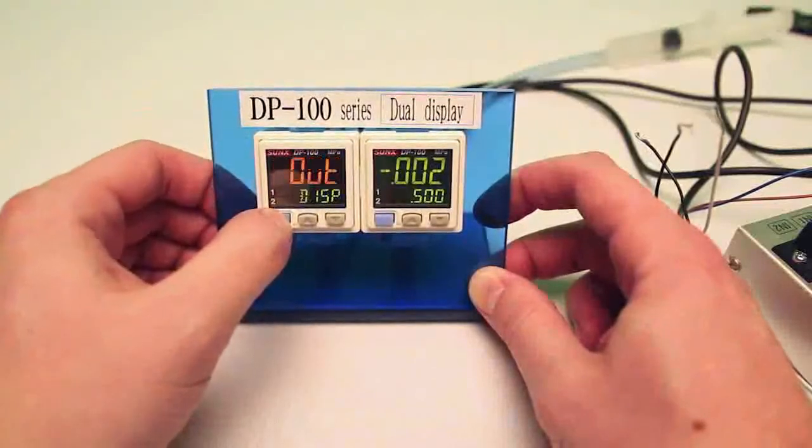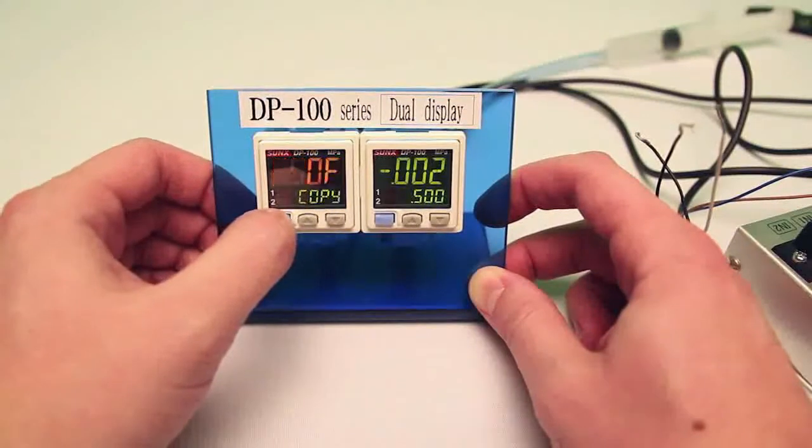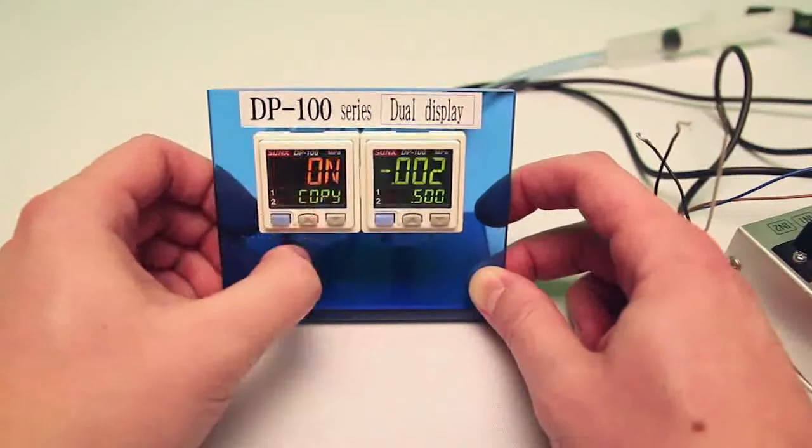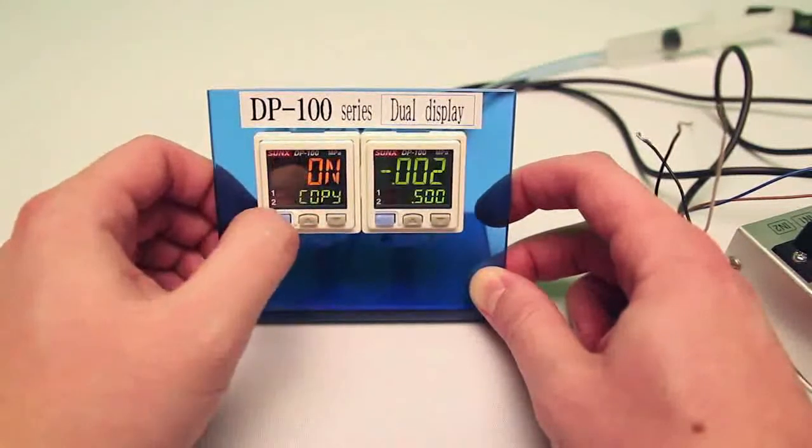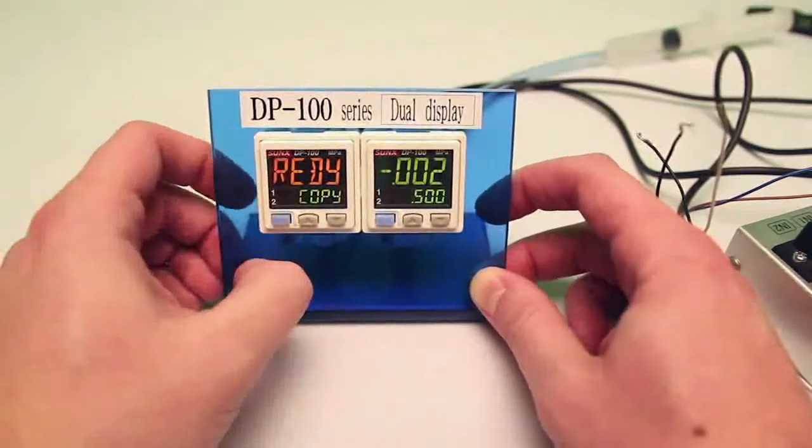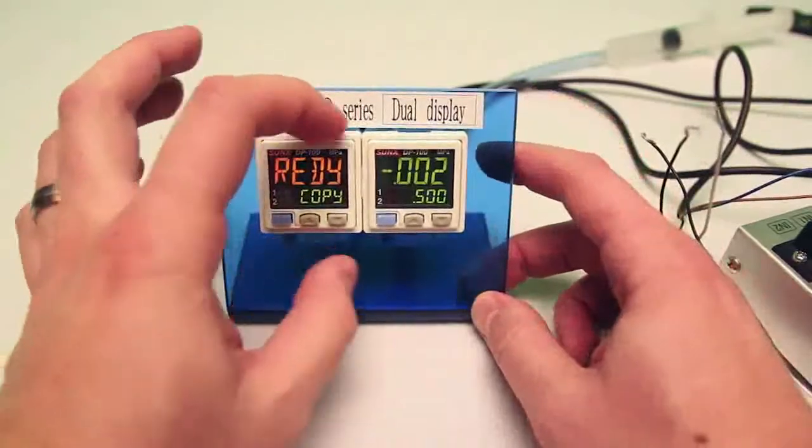Now I'm going to toggle over to copy and by pushing the up button I'm going to turn it on. Now when I hit mode it's going to go back to ready. So it's ready to copy from this sensor over to this one.